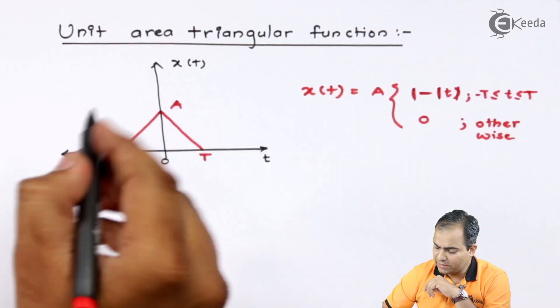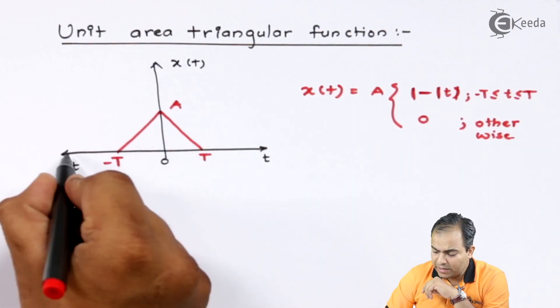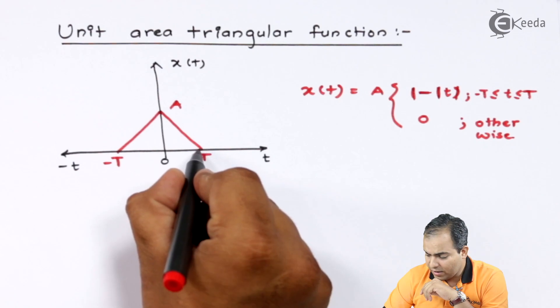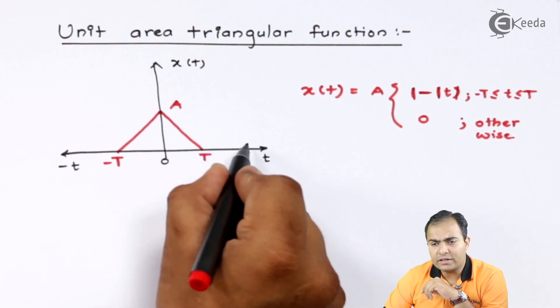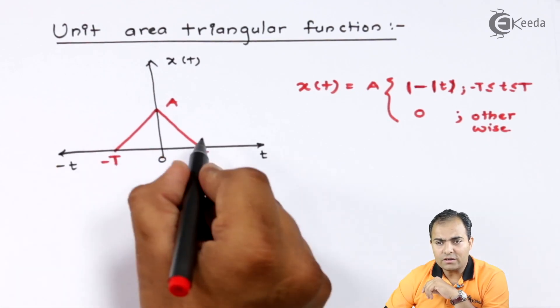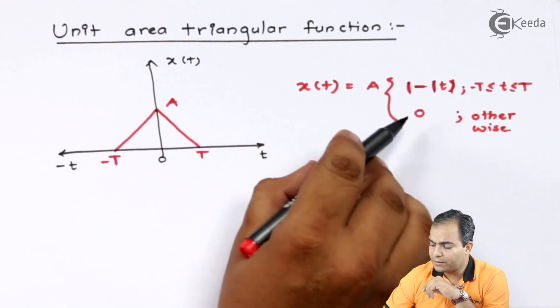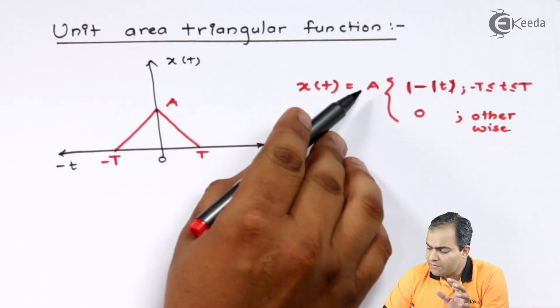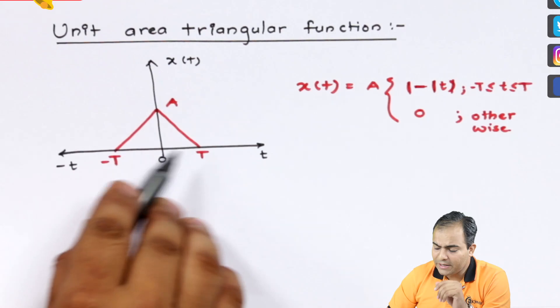Means after minus t and towards or after t, before minus t or after t the amplitude is 0 and having amplitude in between minus t to t.